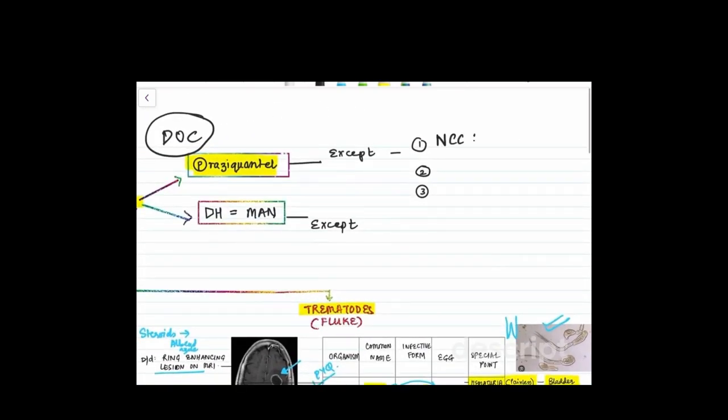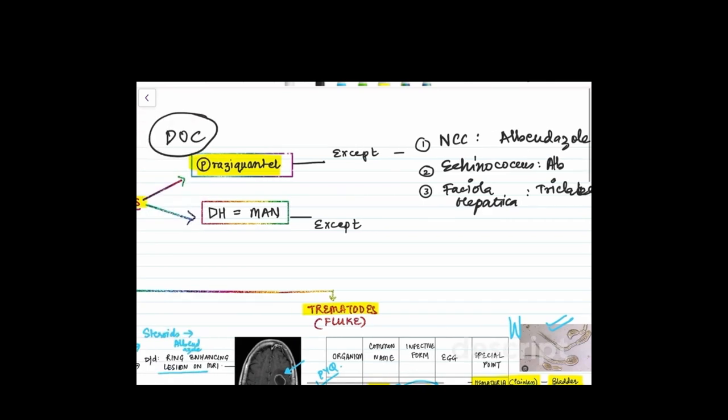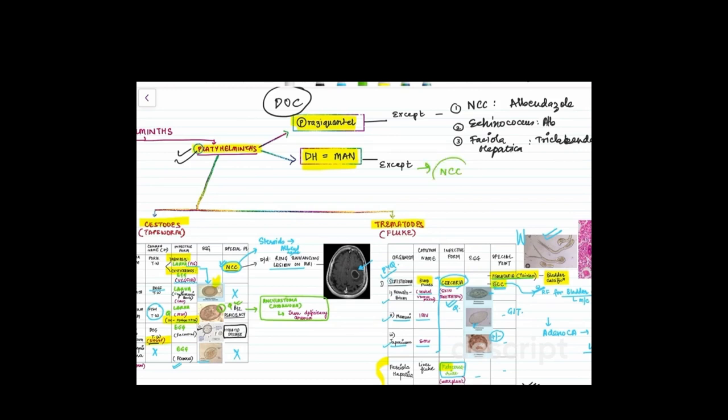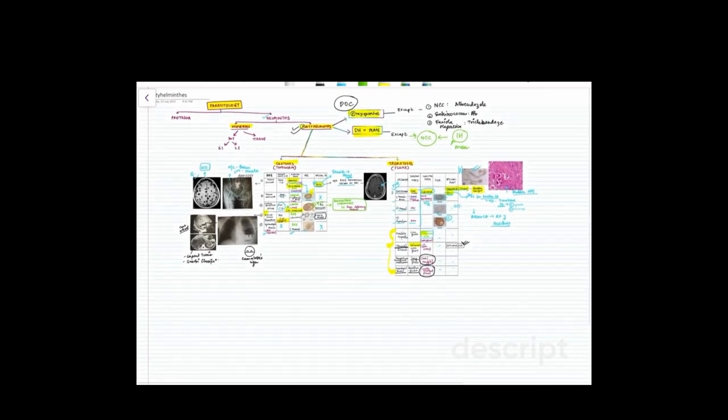First exception we've already discussed, that is neurocysticercosis where the drug of choice is albendazole. The second disease which is also very important is Echinococcus granulosus, the causative organism of hydatid cysts. Here also it's albendazole. And the third is Fasciola hepatica where the drug of choice is triclabendazole. Do watch my previous video where I've discussed that all these drugs are part of the benzimidazole group. A rough rule for all of these is all platyhelminths, the definitive host is man, except one disease and that is very important, that is neurocysticercosis. In neurocysticercosis, man is the intermediate host. That is the only exception. So you don't need to remember for each and every organism, just remember these broad basic rules and that's how we have summarized platyhelminths for you.